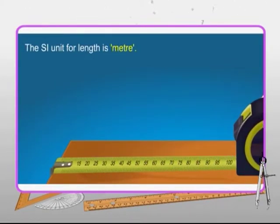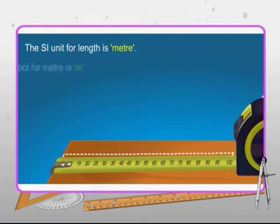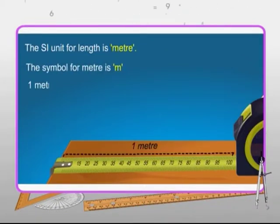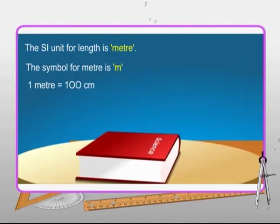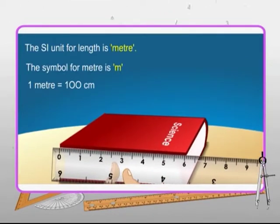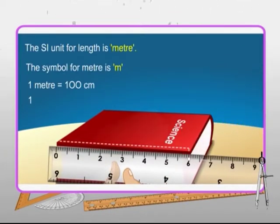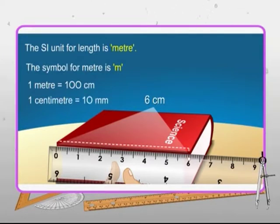The SI unit for length is meter. The symbol of meter is lowercase m. One meter is equal to 100 centimeters. But shorter lengths are not measured in meter. It is measured in centimeter or millimeter. One centimeter equals 10 millimeters.